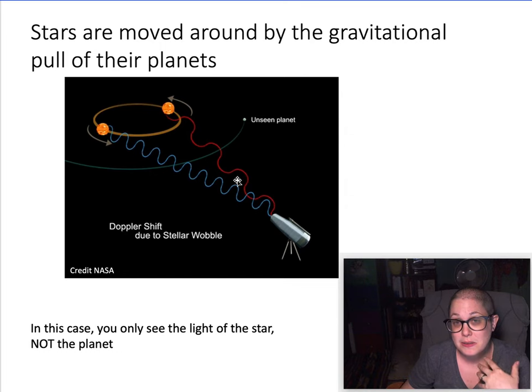It's still exerting a gravitational pull on the star, making the star move in a little orbit of its own. Sometimes the orbit is so tiny it really is just kind of wobbling around, and so you might hear people refer to this as the wobble of the star due to the planets pulling on it.